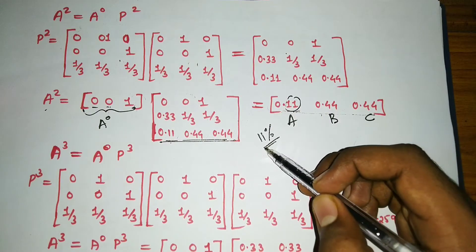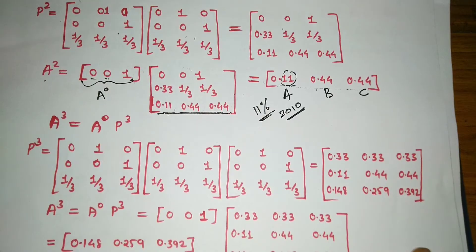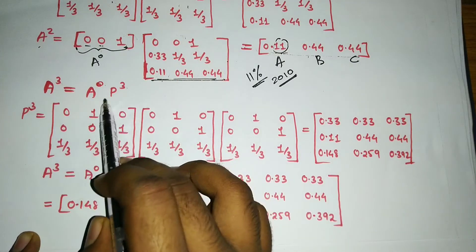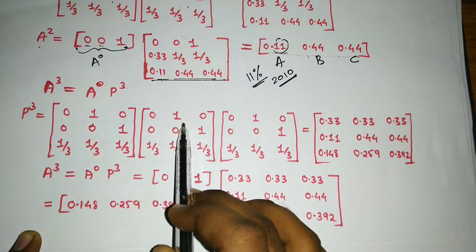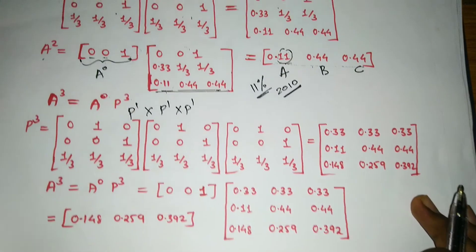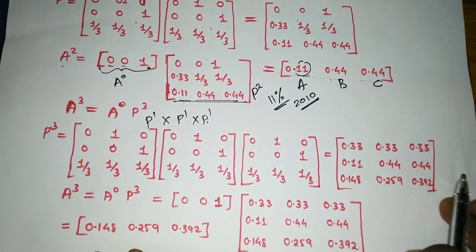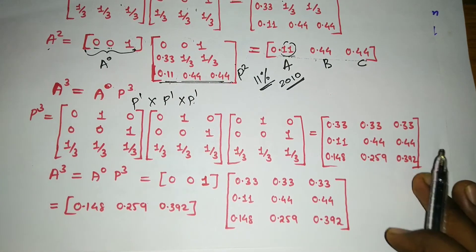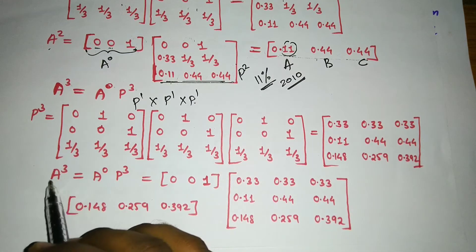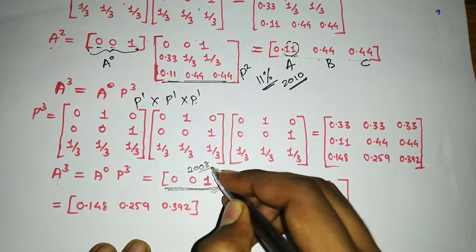Now for 2011, we need a³ = a⁰ × P³. P³ can be computed as P¹ × P¹ × P¹, or equivalently P² × P¹ since we already have P². After multiplying those matrices, we obtain P³. The initial state a⁰ = [0, 0, 1] remains the same — representing the 2008 starting year with brand C.